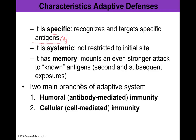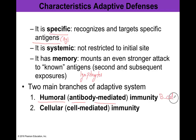One of the main cells essential for adaptive immunity are lymphocytes, which we categorize into B cells and T cells. B cells and T cells form the two main branches of the adaptive immune system. Humoral, or antibody-mediated immunity, is driven by B cells, while cellular, or cell-mediated immunity, is associated with T cells.